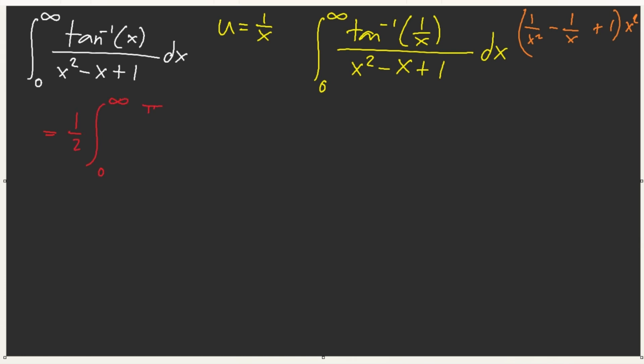And we get pi over 2. We can complete the square here. This gives us x minus a half, 3 to 4. And then we already know where this is going. Pi over 4. This is 2 over root 3, inverse tangent, 2x minus 1 over root 3. Like, we've done this integral so many times. 0 to infinity.